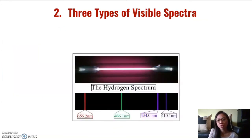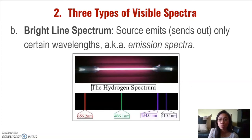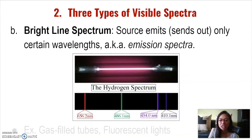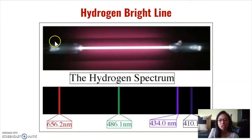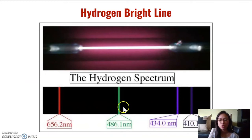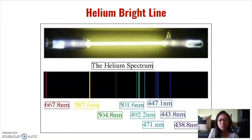However, not all lights provide the full spectrum of colors — some only emit certain wavelengths. This is seen in a bright line spectrum, where the source emits only certain wavelengths. This is also known as an emission spectrum because it shows what wavelengths are emitted by that light. Examples of sources of bright line spectra are gas-filled tubes and fluorescent lights. Here's a hydrogen gas tube which is clearly emitting light. When studied with a spectroscope, only some specific wavelengths are emitted. Note that these wavelengths are specific to hydrogen — no other element will emit these exact same wavelengths in this pattern. For example, helium gas in a tube emits a different number of wavelengths, distinct and different from hydrogen.